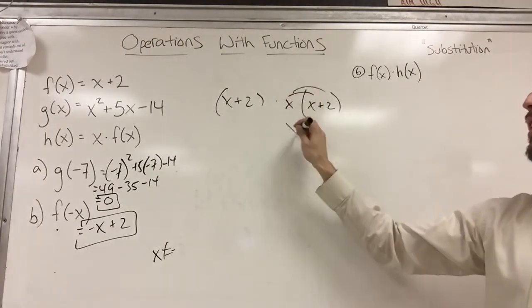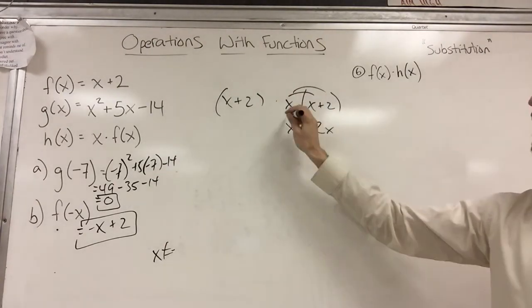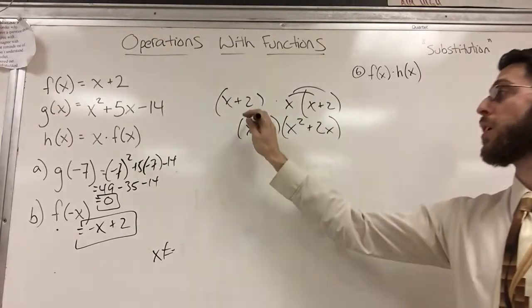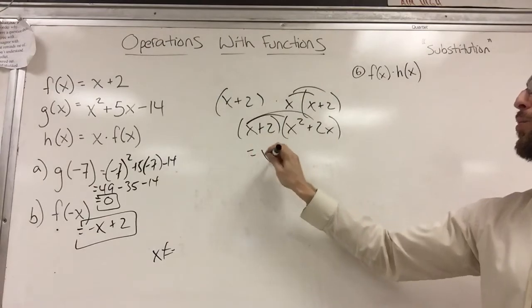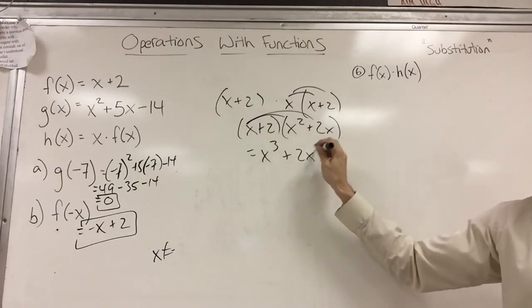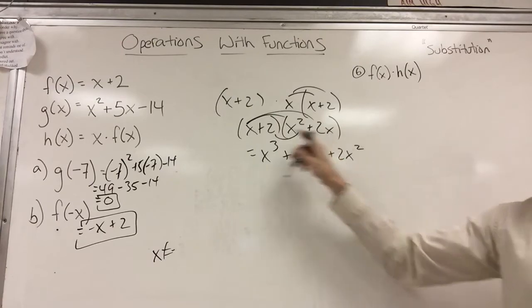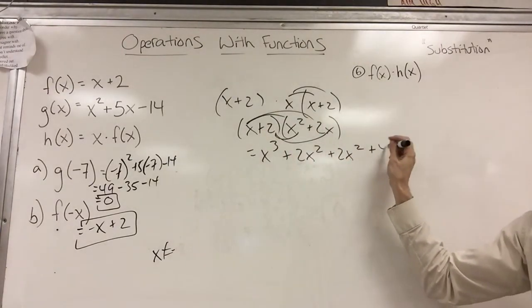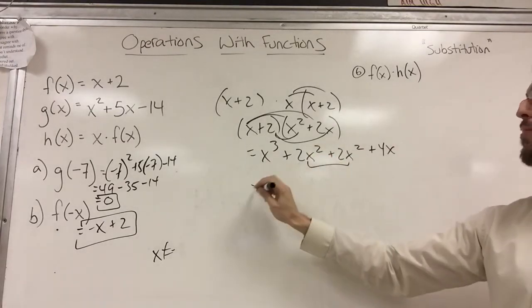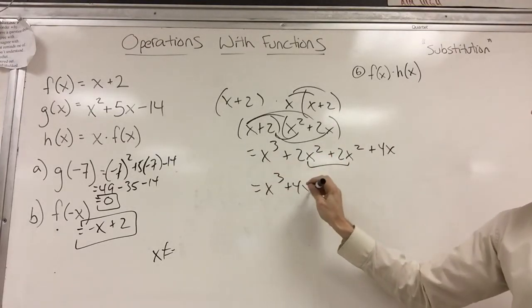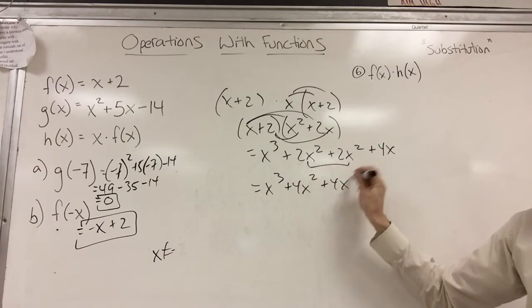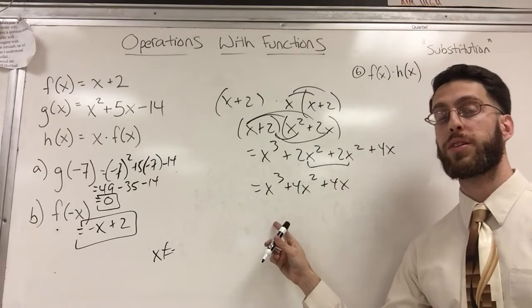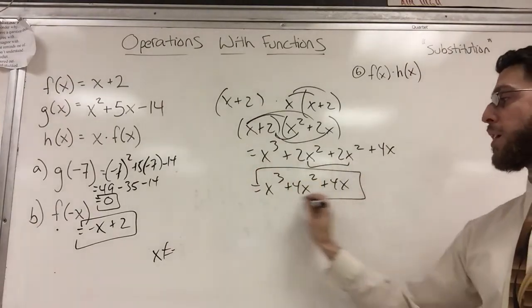So then I just got to distribute here. I get x squared plus two x, and then I'm going to do a little bit of foil. And hopefully you can do that one on your own. I got x cubed plus two x squared plus another two x squared plus four x. And if I combine my like terms, I have x cubed plus four x squared plus four x. And depending on if it's multiple choice or whatever, you could go further. You could factor it, but I multiplied. I'm done.